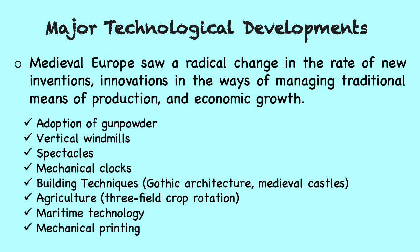After the Renaissance of the 12th century, medieval Europe saw a radical change in the rate of new inventions, innovations in the ways of managing traditional means of production, and in their economic growth. The period saw major technological advances, including the adoption of gunpowder, the invention of vertical windmills, spectacles, mechanical clocks, greatly improved water mills, as well as building techniques and advances in agriculture. European technical advancements from the 12th to 14th centuries were either built on long-established techniques in medieval Europe originating from Roman and Byzantine antecedents, or adopted from cross-cultural exchanges through trading networks with the Islamic world, or with China and India. Often, the revolutionary aspect lay not in the act of invention itself, but in its technological refinement and application to political and economic power.